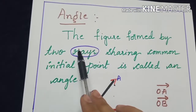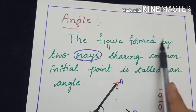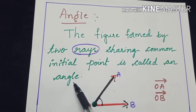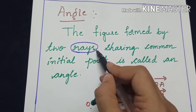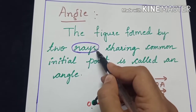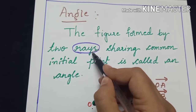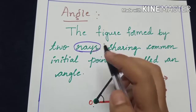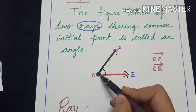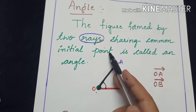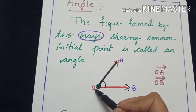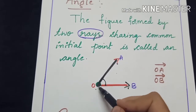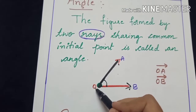Now let us recall the definition of an angle. The figure formed by two rays sharing a common initial point is called an angle. We already know the definition of a ray — a ray has one initial point and there is no end point. Such two rays which have the same initial point form an angle. For example, OA is a ray and OB is also a ray, and both have the same initial point, that is O.